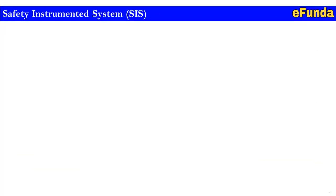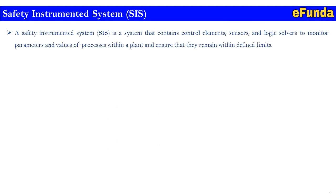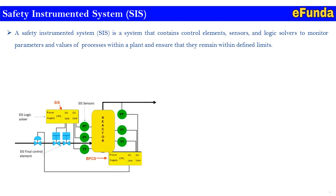A Safety Instrumented System (SIS) is a system containing control elements — sensors and logic solvers — to monitor process parameters and values within the plant, ensuring they remain within defined limits. A schematic shows the arrangement of field instruments: SIS final control elements, pressure instruments connected to a reactor, and PT field devices connected to both BIPS and the SIS system. The SIS logic solver is highlighted in red, with SIS sensors also shown.